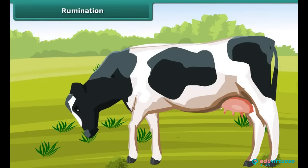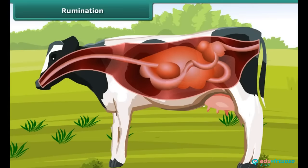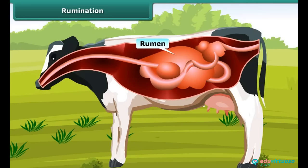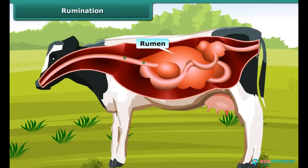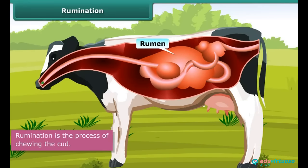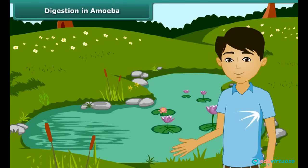Have you observed a cow chewing continuously even when it is not eating? What happens is it quickly swallows grass and stores it in a rumen, where the food gets partially digested and is called cud. Later, the cud returns to the mouth in small lumps and the animal chews it again. This process is called rumination, and these animals are called ruminants.